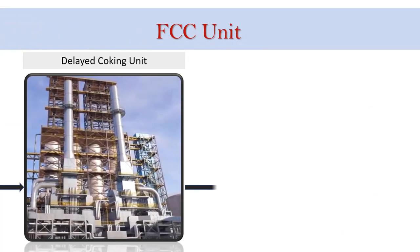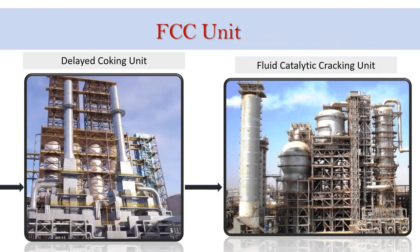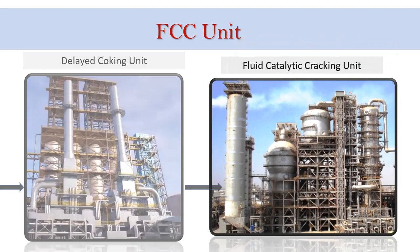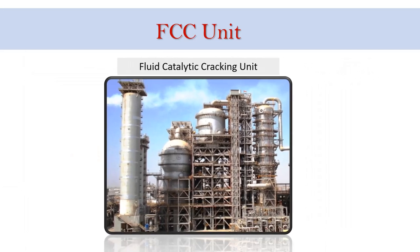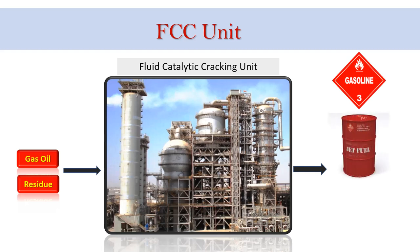The gas oil feed for the conventional catalytic cracker comes primarily from the atmospheric column, the vacuum tower, and the delayed coker. The main purpose of the FCC unit is to convert high boiling petroleum fractions to high-value transportation fuels such as gasoline, jet fuel, and diesel.